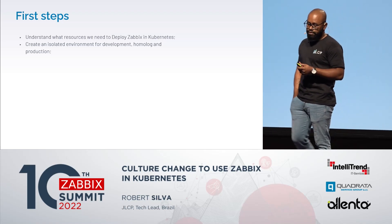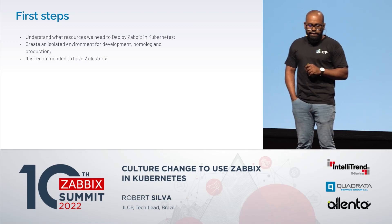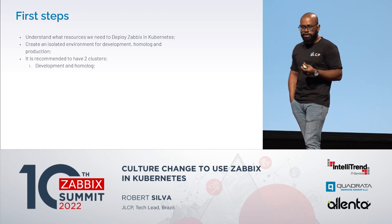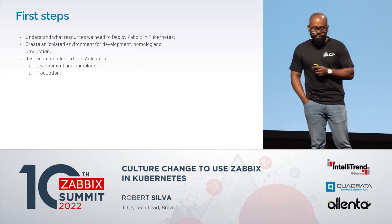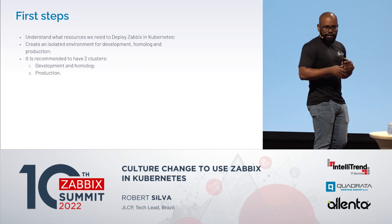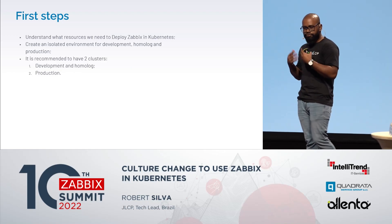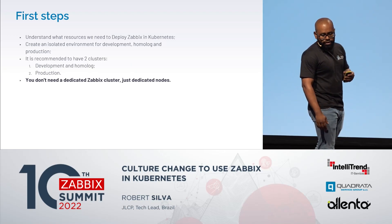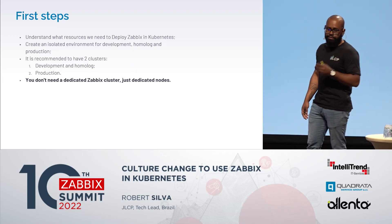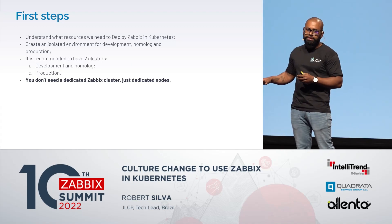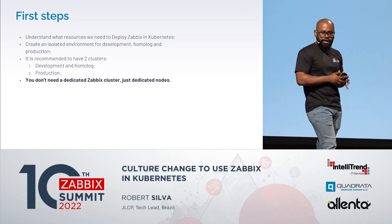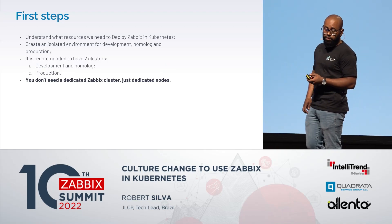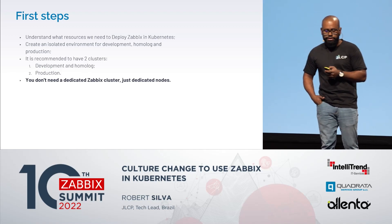It's recommended to have two clusters: one cluster for development and homologation, and another for production. This way you can try new solutions and functionality without breaking your production environment. You don't need a dedicated Zabbix cluster — you just need dedicated nodes, and you can leverage the existing Kubernetes environment in your company or at your customers.